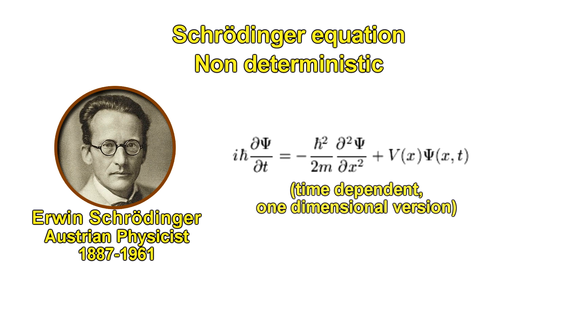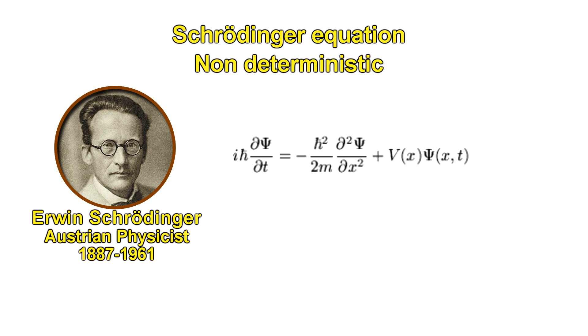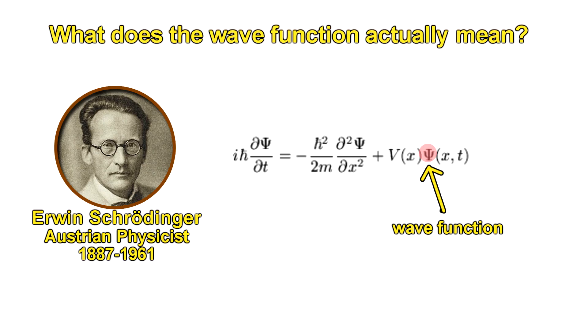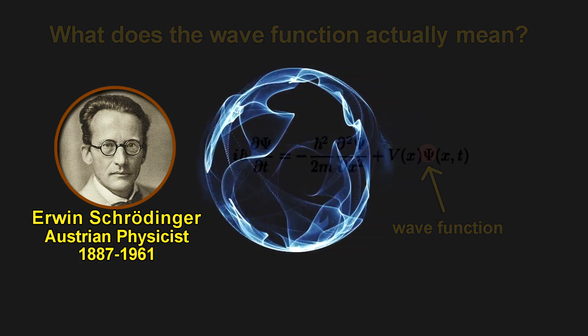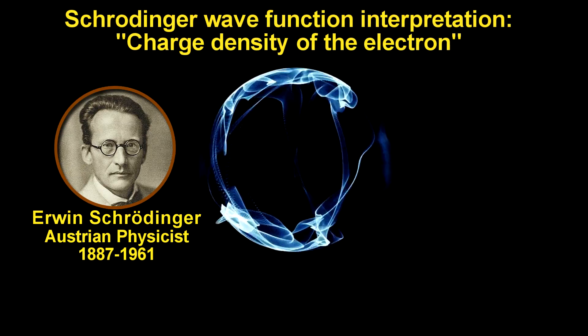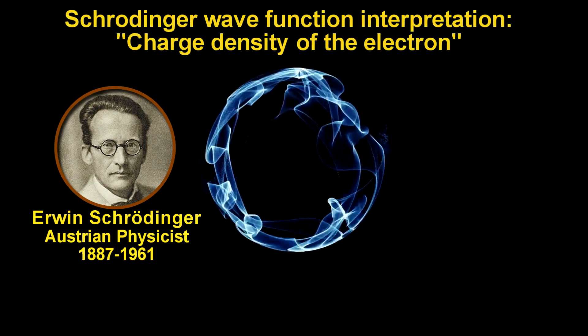The psi in the equation, which looks like a trident, is a wave function. Psi gives us the shape of the wave, as a function of x. Schrödinger himself struggled with the interpretation of this wave function. That is, what does it actually mean. His interpretation was that it was the charge density of the electron over space. But this was actually not correct, and it did not work.